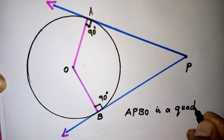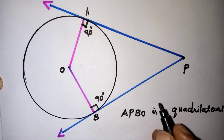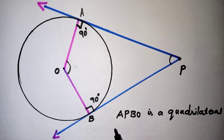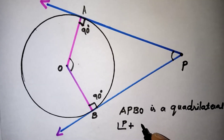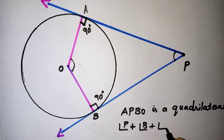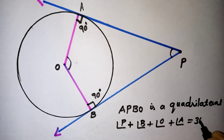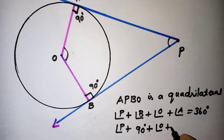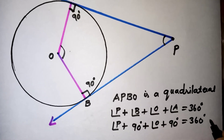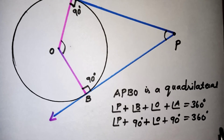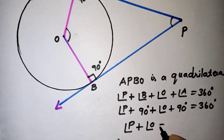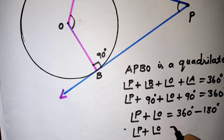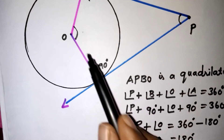Since APBO is a quadrilateral, by the angle sum property all interior angles add up to 360 degrees: angle P + angle B + angle O + angle A = 360°. Substituting the known values — angle B = 90° and angle A = 90° — we get angle P + 90° + angle O + 90° = 360°. Therefore angle P + angle O = 360° − 180° = 180°.